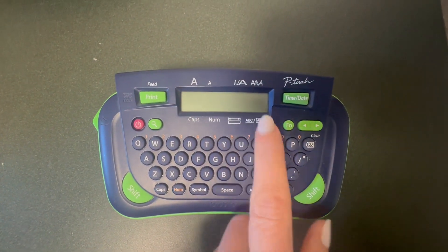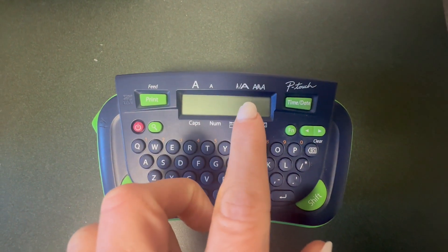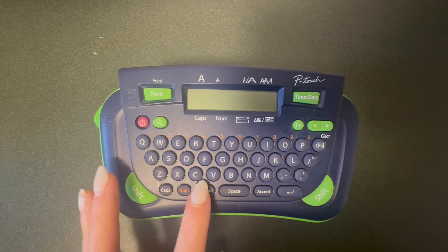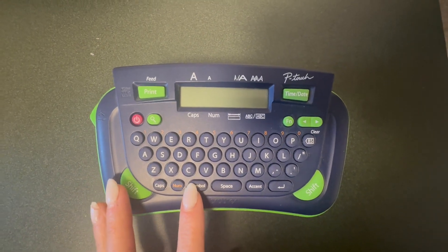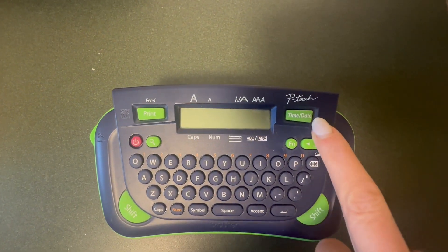It does caps, numbers, spacing, lowercase, uppercase. It gives you different font sizes. You can do all of the symbols that you would need. Time and date is great. I don't have that on some of my other label makers.